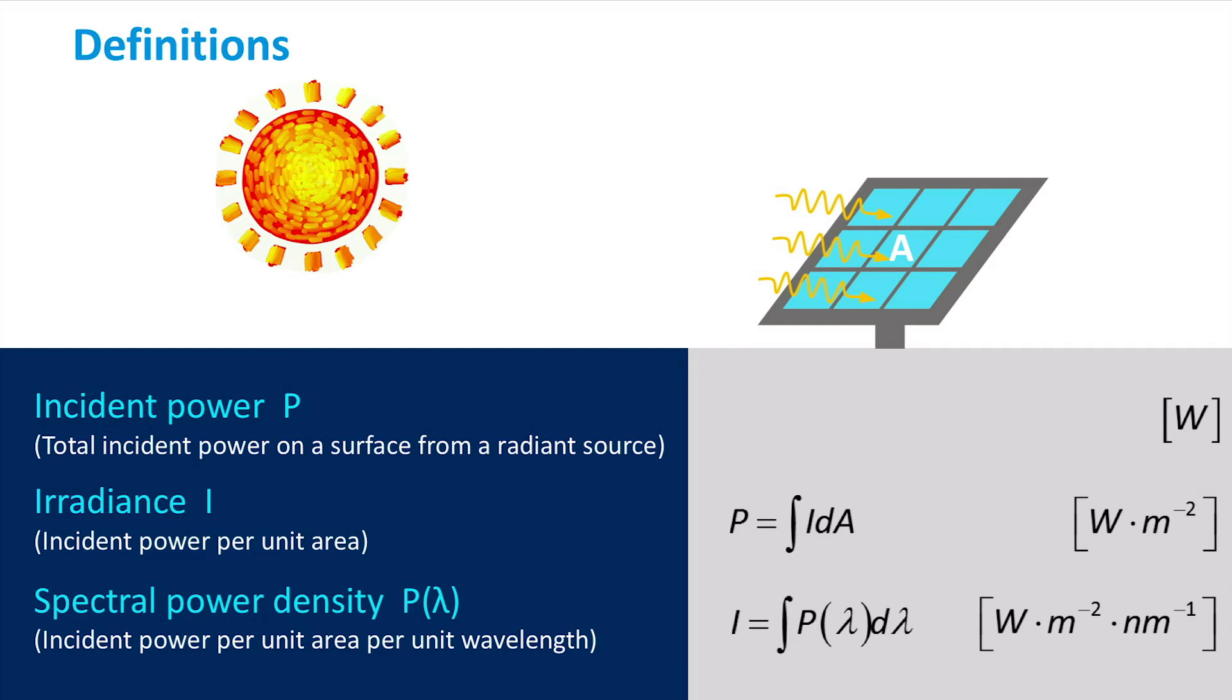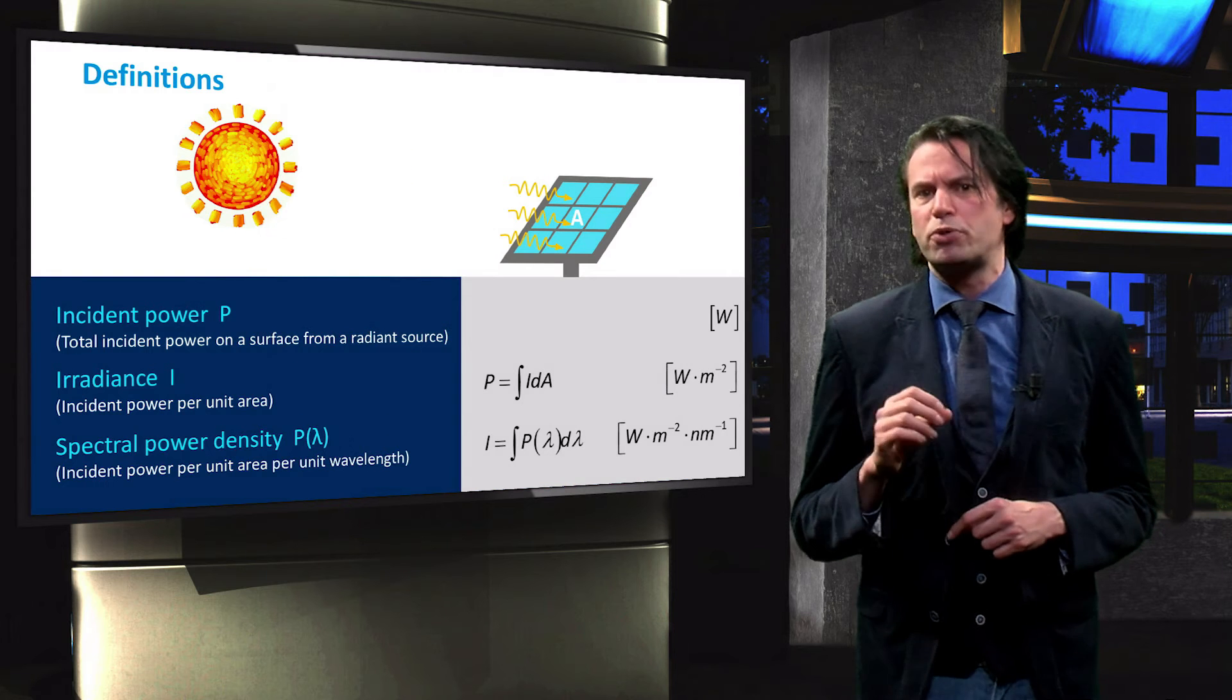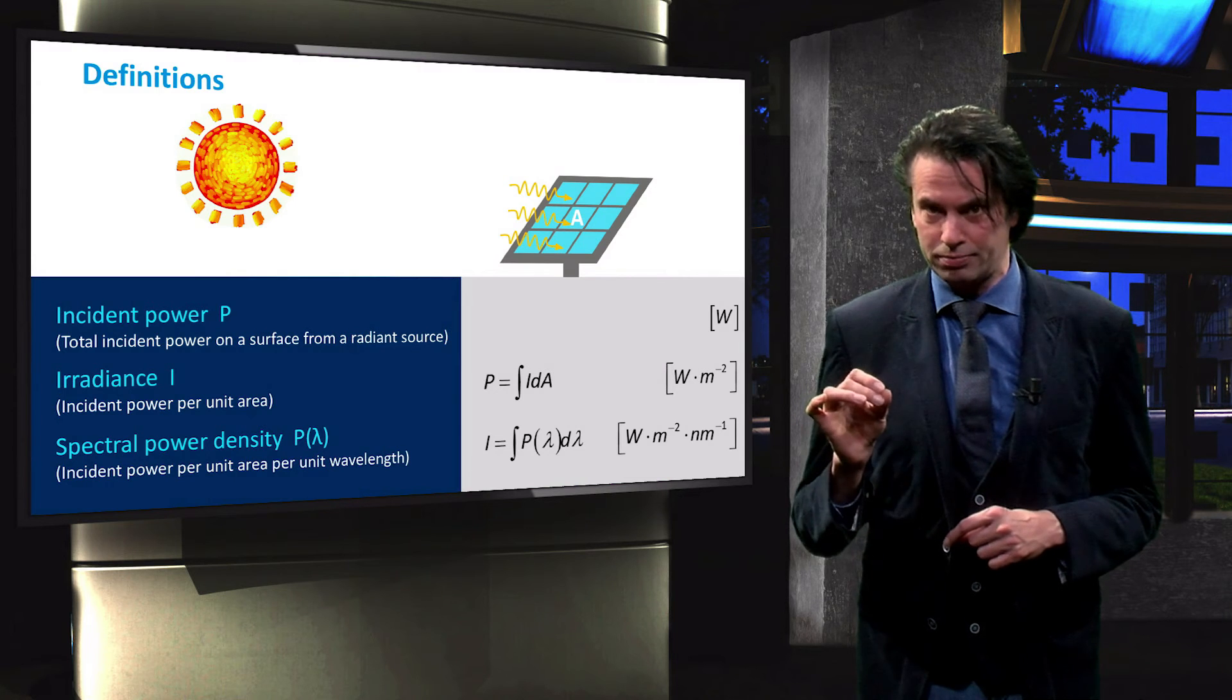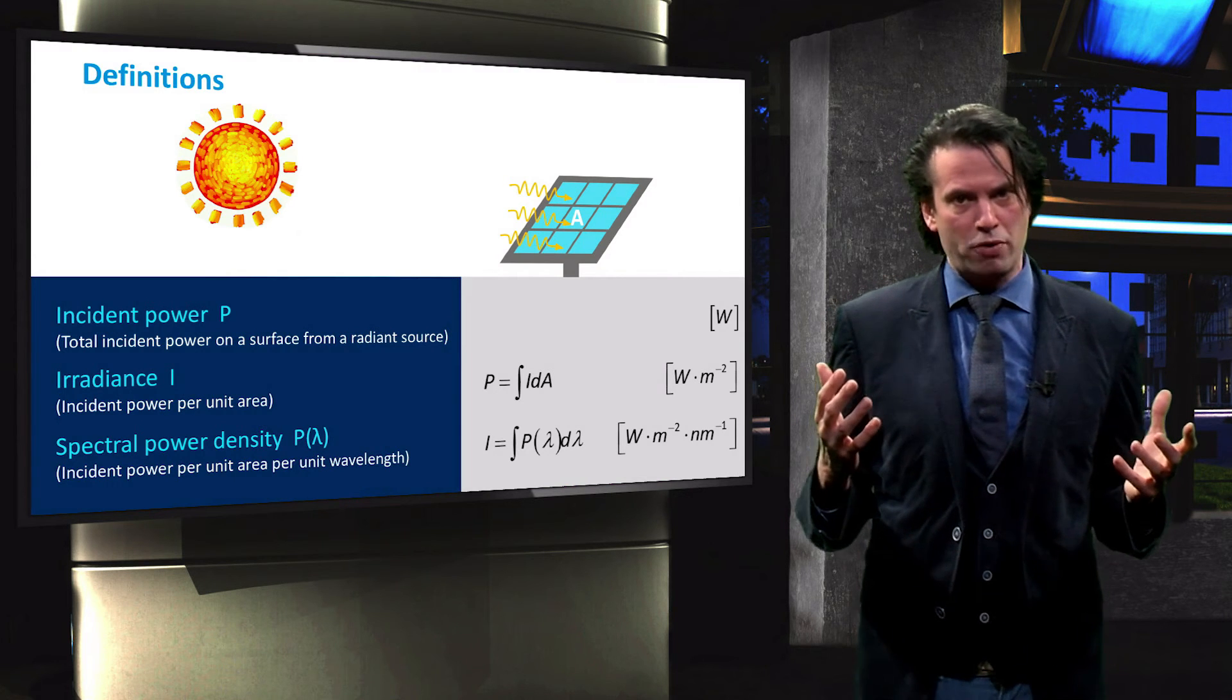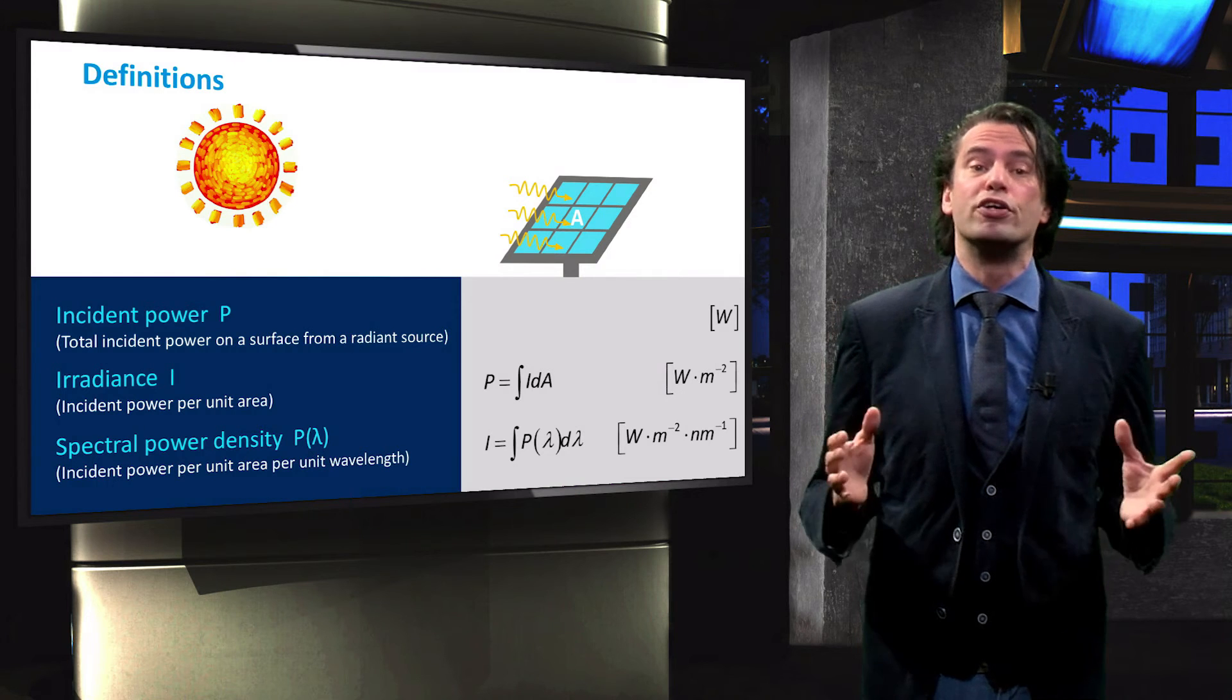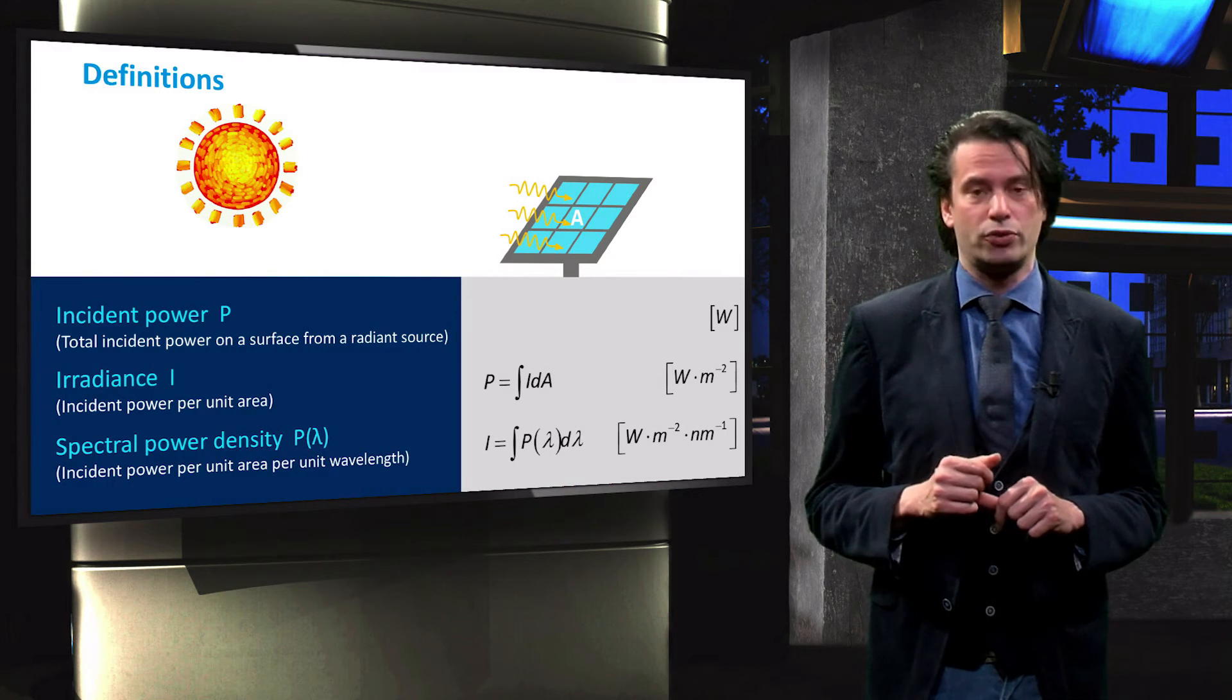The term spectral is added to express a certain quantity per unit wavelength. Consequently, the incident power density per unit wavelength is called spectral power density or spectral irradiance. It is measured in watt per square meter per nanometer. We can obtain the irradiance from the spectral power density by integrating over the relevant wavelength range.